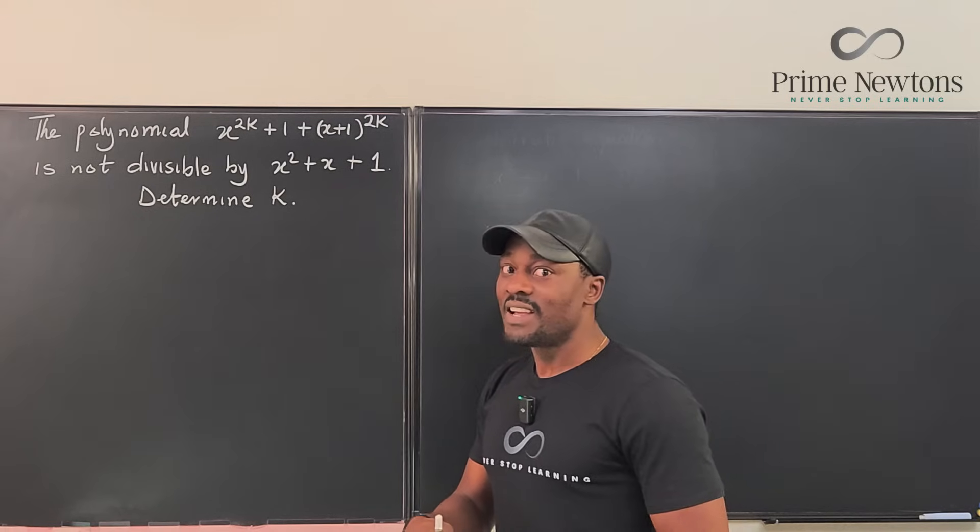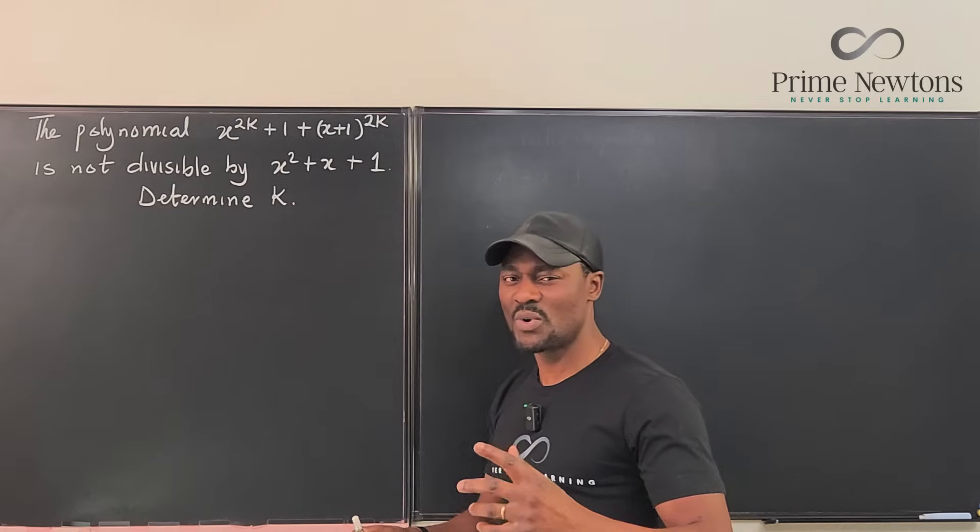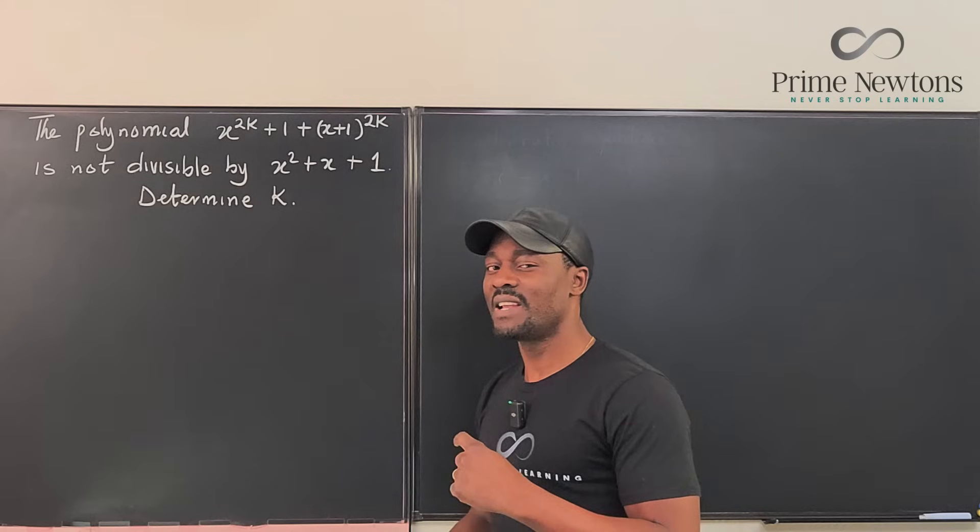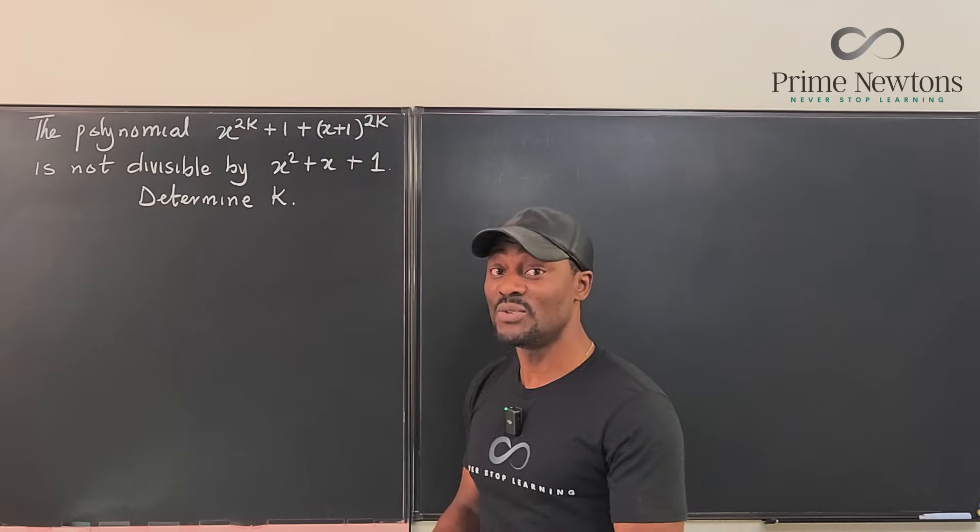And yes, this is the culprit here. See, this looks like something you've seen before, x squared plus x plus 1. If you solve this polynomial, you're gonna get an answer that is called the cube root of unity.